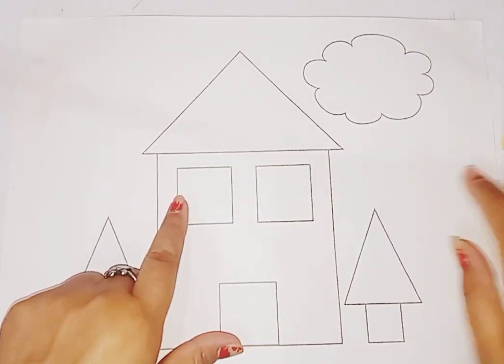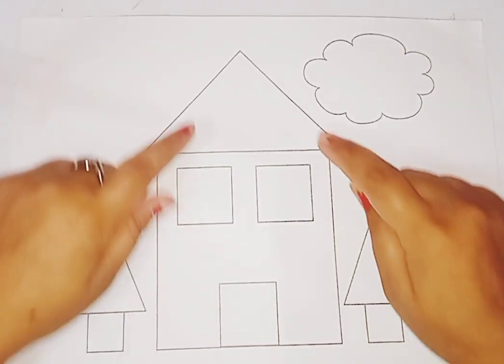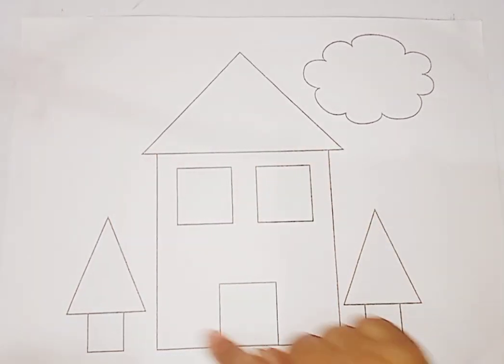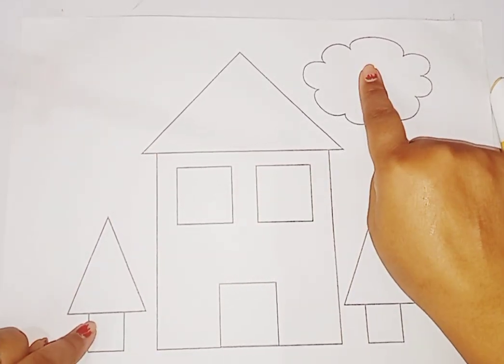This is a shape house and this shape house has many types of shapes: triangle, square, rectangle, triangle, square, and here is a cloud.